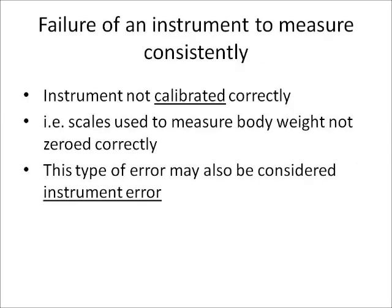Next is failure of an instrument to measure consistently. The instrument is not calibrated correctly. An example: scales used to measure body weight not zeroed correctly. If you step on a scale and it reads 150 pounds, that's correct — but if you step on it a second time and it reads 170, that's not calibrated and that is an instrument error.